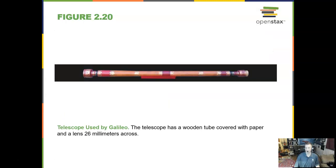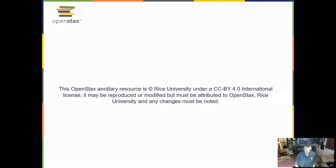And so here is what his telescope looked like. It was a wooden tube covered with paper and had a lens 26 millimeters across. That's about an inch.